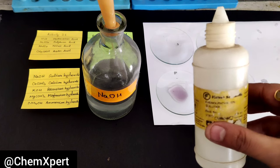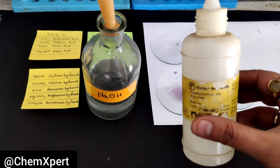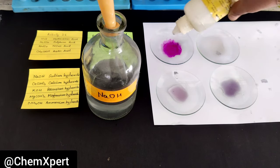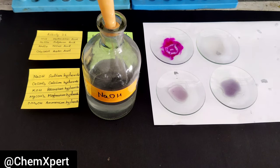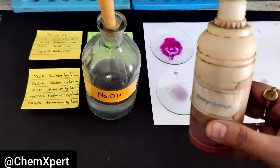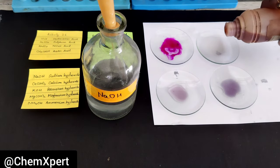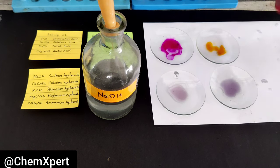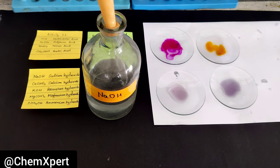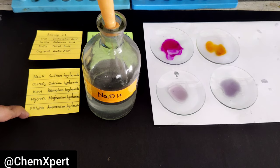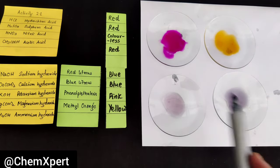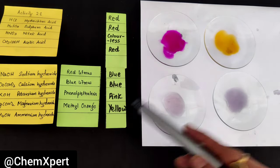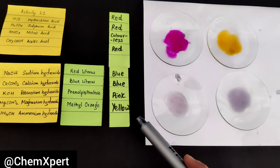In case of phenolphthalein: in acid it remains colorless, but in case of base it gives a pink color solution. Then methyl orange — it is red in acid, but in case of base it turns the solution yellow. So the observations common for all bases are: red litmus turns blue, blue litmus remains blue, phenolphthalein turns pink, and methyl orange turns yellow.